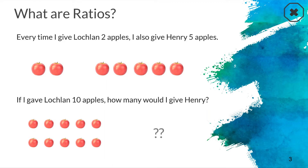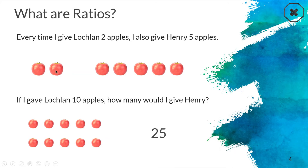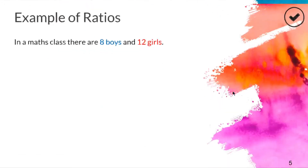For every two Lachlan gets, Henry gets five. If I'm going to give Lachlan ten, how many would I give Henry? Well, with this ratio of two apples, I'm essentially doing this five times — one, two, three, four, five. So if I'm giving Lachlan his share five times, I need to give Henry his share five times too. Five lots of five gives our answer of 25. A ratio of two to five is the same as a ratio of ten to 25 — that's what ratios are: proportions with two parts.